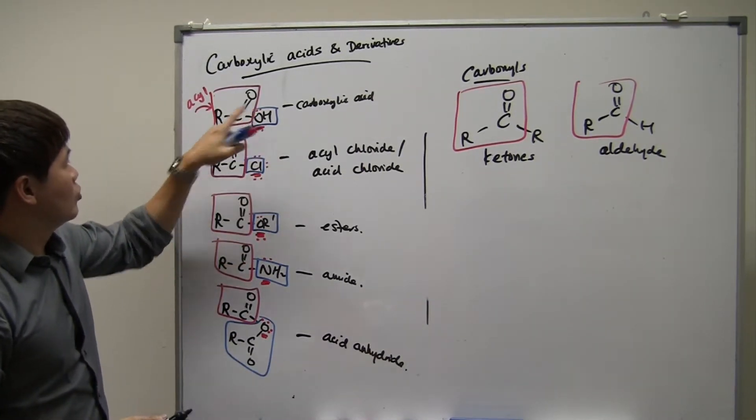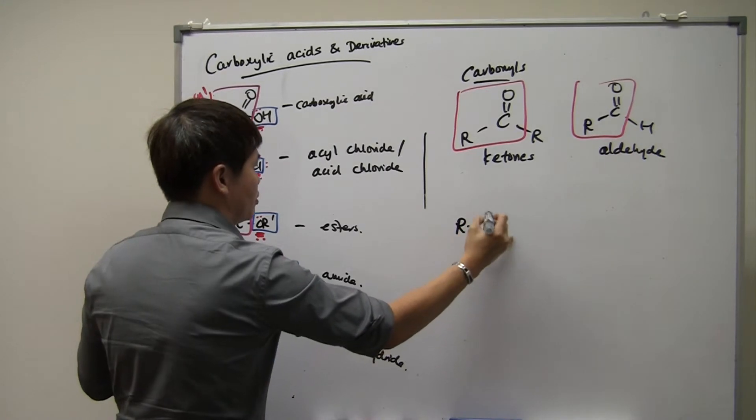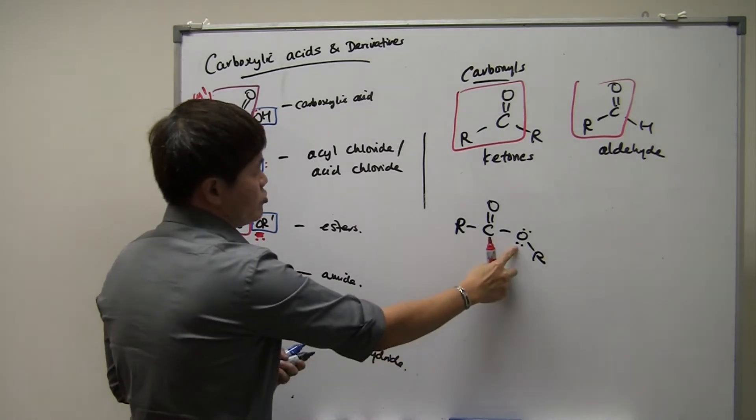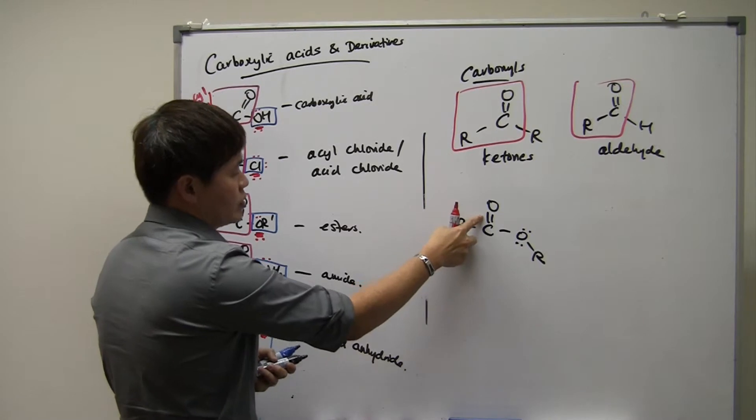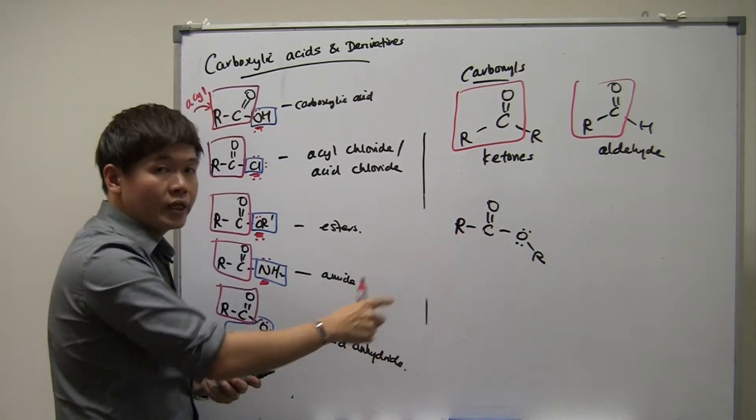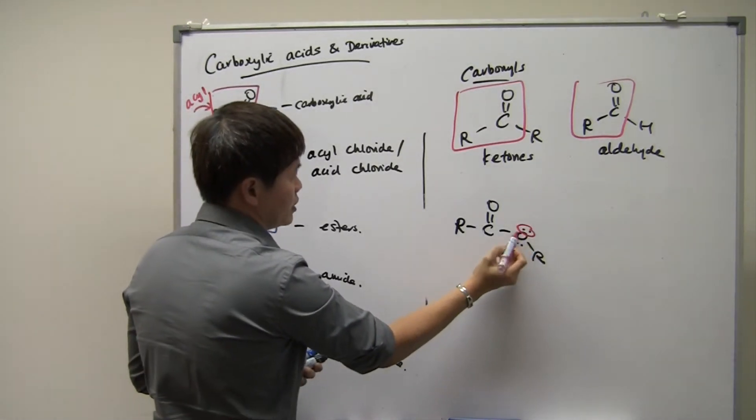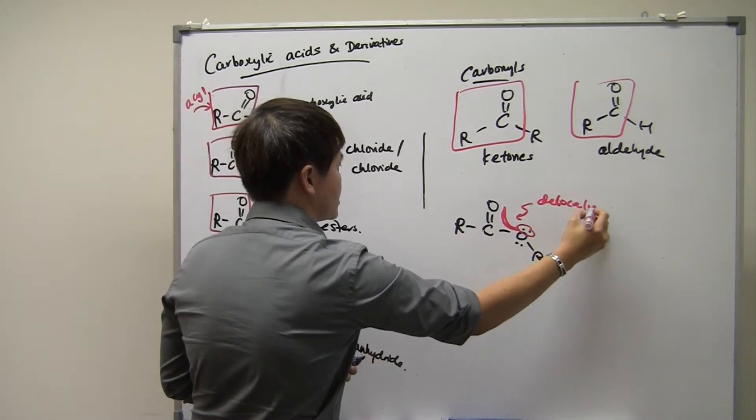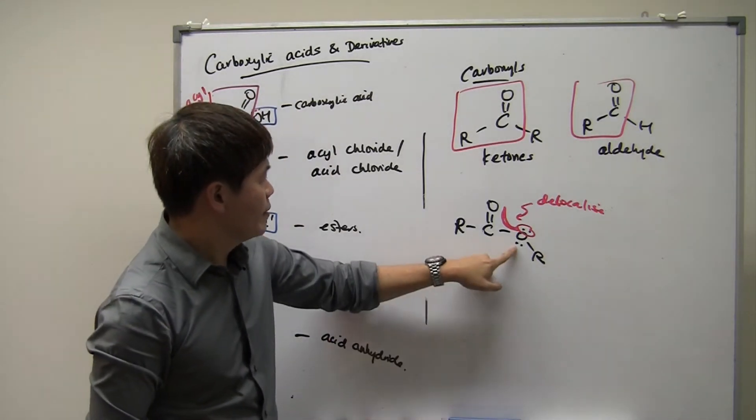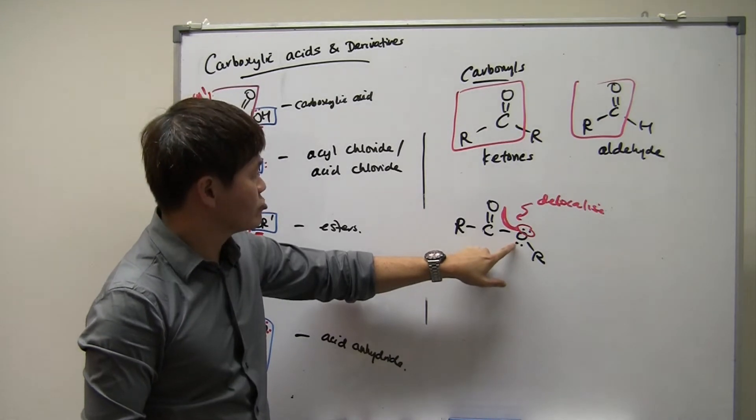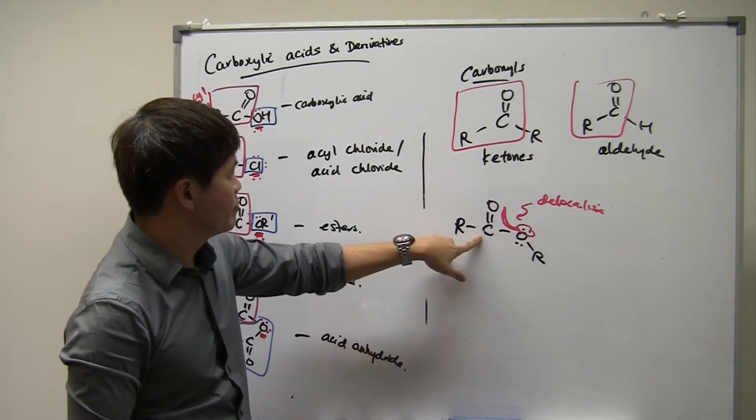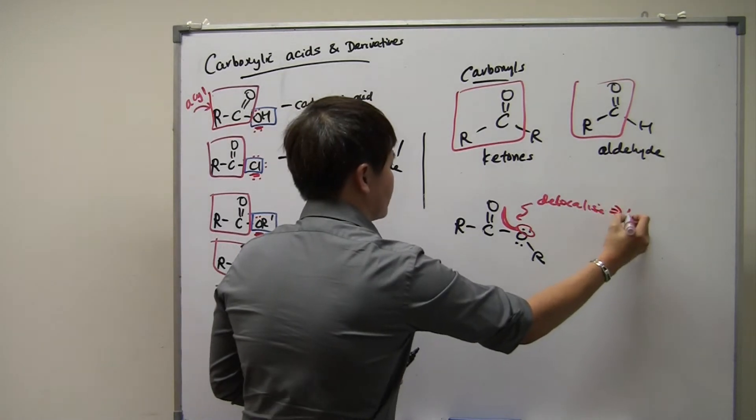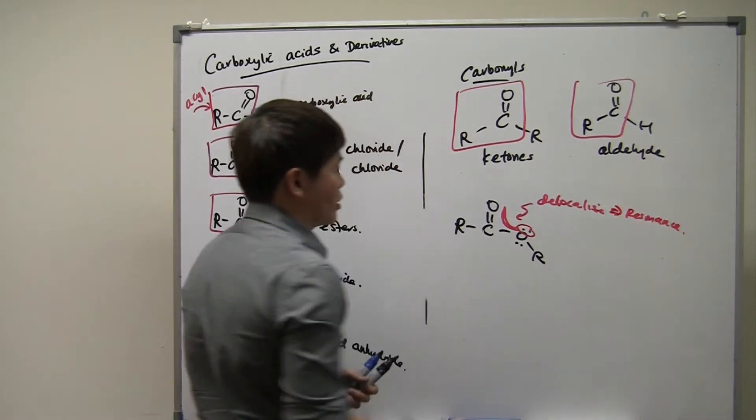So once you have got electronegative elements with a lone pair coming in, what's going to happen? I'm going to show you an example of esters. This is an ester. What you notice is that this is a region of high electron density. The double bond has got a region of high electron density, and it's separated by a single bond, which has got slightly low electron density. What's going to happen is that the lone pairs here can basically delocalize across three atoms. Delocalization can happen for this lone pair because the sp3 orbitals can actually overlap with the carbon's sp2 orbitals. Basically, the lone pairs here can delocalize across three atoms. This is the effect of resonance. Resonance is a very stable structure.